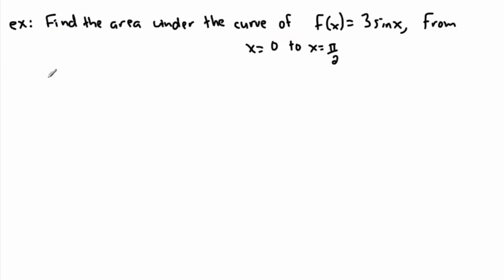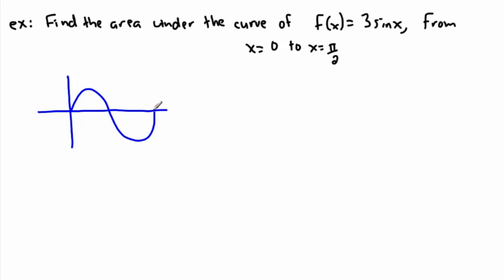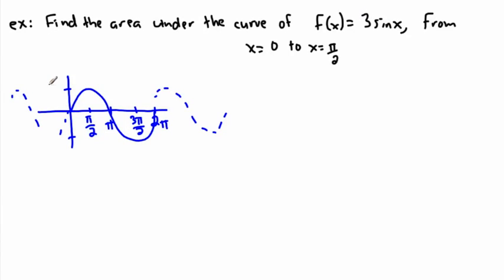Let's do it again with another one that may look more complicated. This time we want to find the area under the curve f of x equals 3 sine x from x equals 0 to x equals pi over 2. Sine x always starts here, goes up, goes down, goes back, and has a period of 2 pi — so halfway is pi, and pi over 2 is here. Now this isn't just sine x, it's 3 sine x, which means instead of going up and down by 1 it goes up and down by 3. So this is 3 and negative 3.